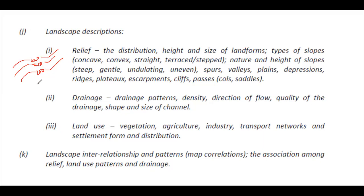Another feature that shows relief is the spot height — a little dot with a number value beside it, for example 35. You could also see a small triangle with a dot inside and a number beside it; this is a trig station. Both the spot height and the trig station show the height at a particular point, whereas the contour line shows the same height all along the line.